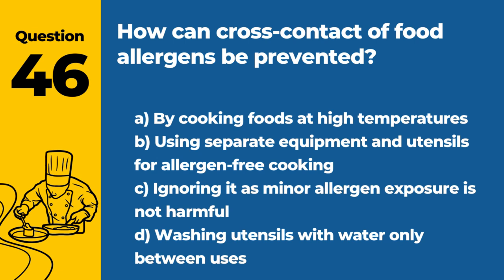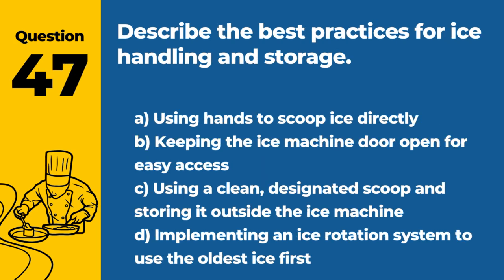Question 46. How can cross-contact of food allergens be prevented? The answer is B: Using separate equipment and utensils for allergen-free cooking. This prevents allergens from unintentionally being transferred to other foods.